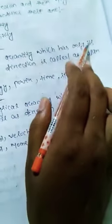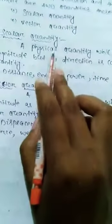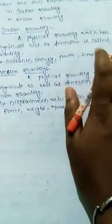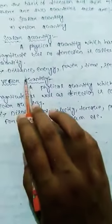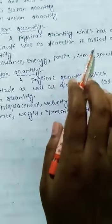Then I discuss about classification on the basis of direction and magnitude. The physical quantity which has only magnitude but no direction is called a scalar quantity. Examples of scalar quantities are: distance, energy, power, time, and speed.